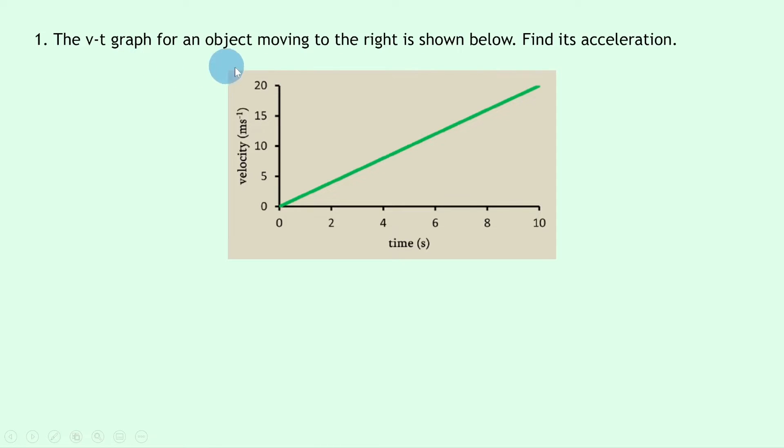So let's get started. Question one says the velocity-time graph for an object moving to the right is shown below. Find its acceleration. You can see in this graph that we have a uniform or constant acceleration over the 10 seconds, and I'm going to show you the two different methods that we can use to calculate acceleration. Firstly, we have the gradient method, so finding the gradient of the line.